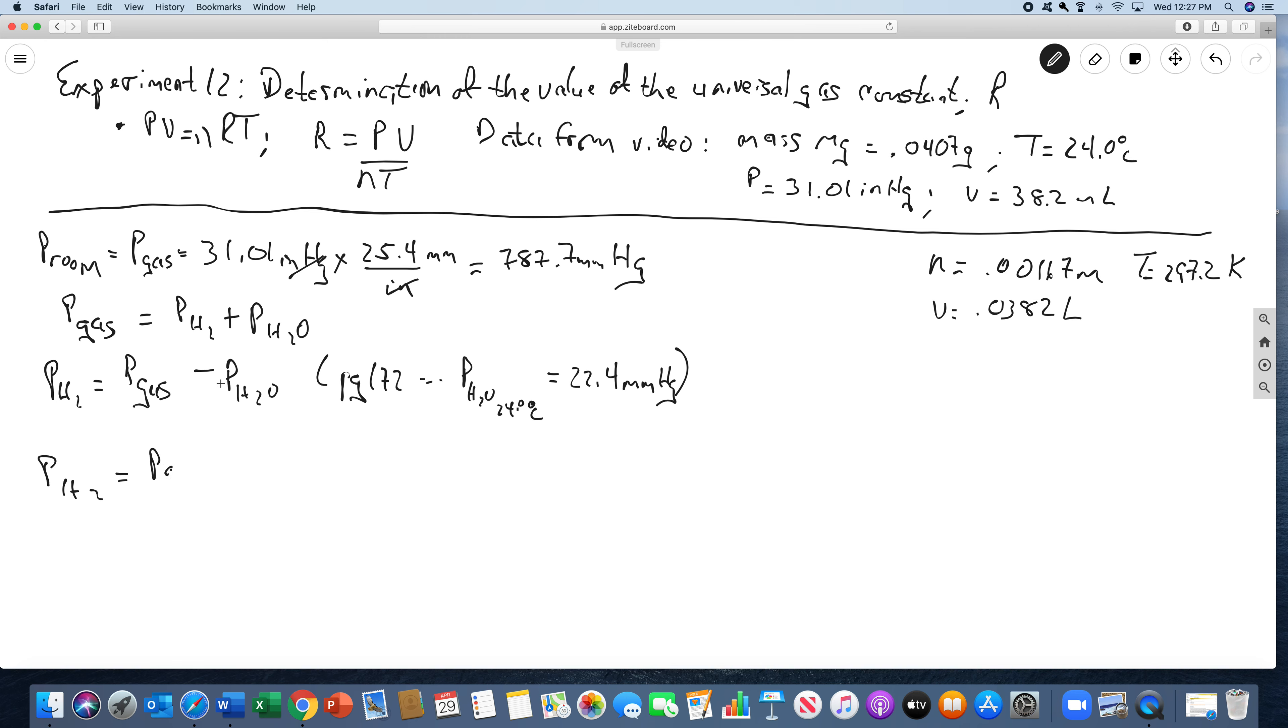So the pressure of hydrogen is the pressure of the gas, we'll just put the actual numbers in. The pressure of the gas is 787.7 from up here, minus 22.4. Don't forget, anytime you collect things over water using this method, you have to subtract that out. That means there's 765.3 millimeters of mercury from the hydrogen.